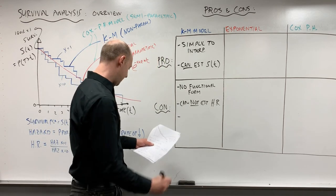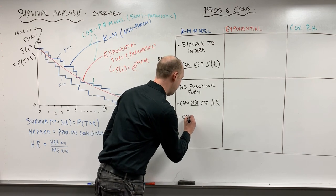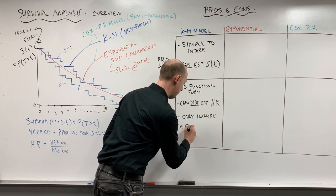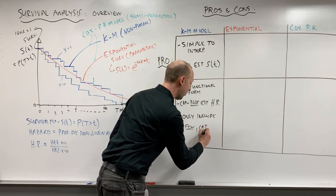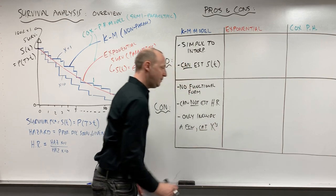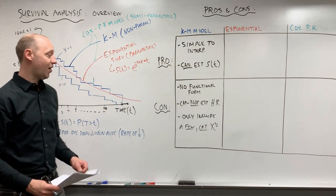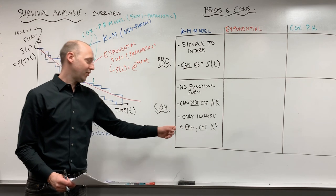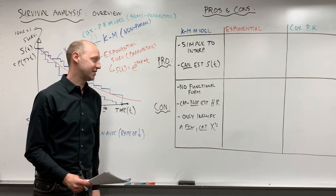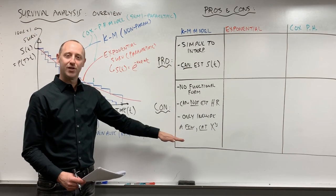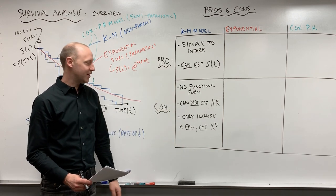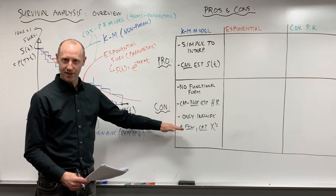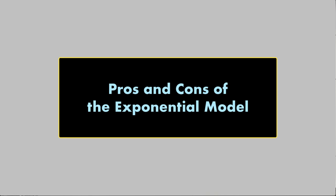And the final con of this is it can only include a few and there must be categorical x variables. The Kaplan-Meier model cannot incorporate numeric x variables. It can only handle categorical x's and it can only handle a few categorical x's. As we go through and progress that discussion, we'll see exactly why it can't incorporate numeric variables and why it can only handle a few categorical x's.